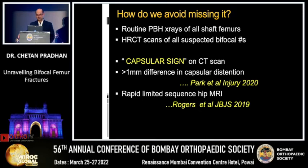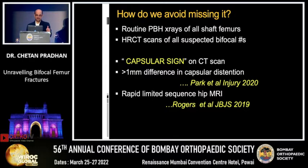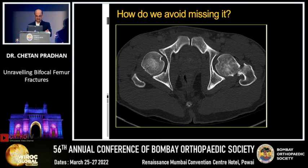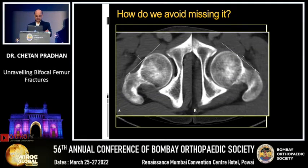How do we avoid missing it? Obviously, we all take a pelvis with both hips in all shaft femurs. There is a capsular sign described by Park which involves looking at the soft tissue window of the CT scan for a 1 mm difference in the capsular thickness, which is suggestive of a missed or occult femoral neck fracture. Rogers described a rapid limited sequence MRI of the hip, which supposedly takes only 10 minutes, but we are doing HR CT only. You draw a tangential line from the trochanter to the head and assess the capsular distension in the soft tissue window; if it is more than a millimeter, it is indicative of hematoma within the capsule — that is the capsular sign.